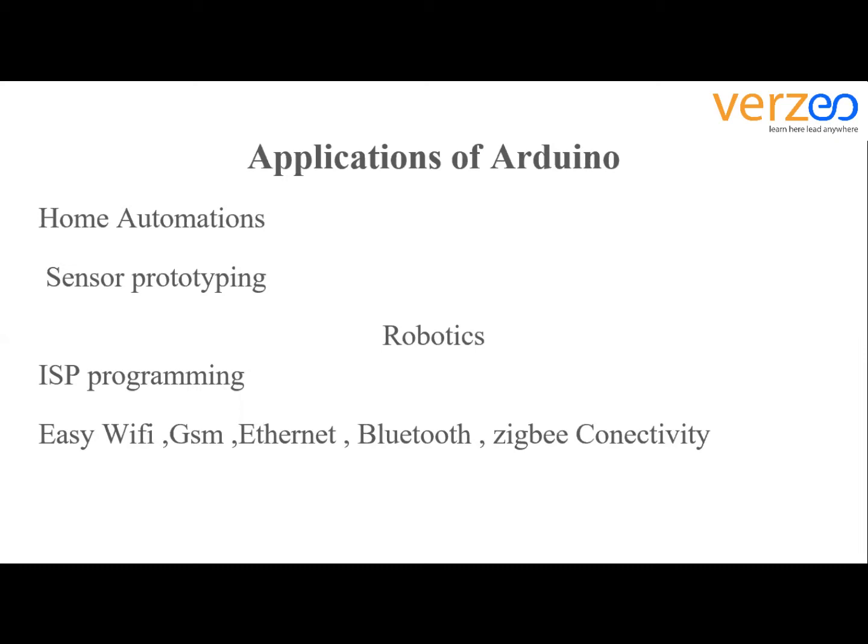The Android app provides a user interface through which you can control your home appliances. Nowadays people have smartphones with them all the time, so it makes sense to use these to control home appliances. The hardware requirements for a normal home automation setup include Arduino Uno, Bluetooth, a relay board, tungsten bulbs, connecting wires, and AC power supplies.